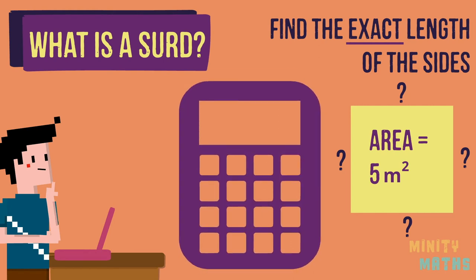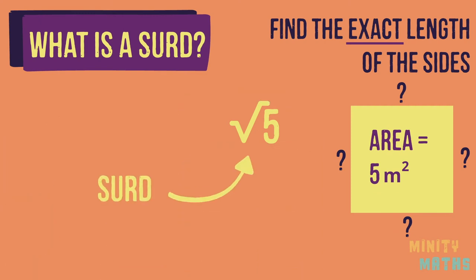You may have tried to work this out using a scientific calculator in which case you will see the answer written as a root depending on your calculator settings. This is a surd. So the exact answer to this question is the square root of five.